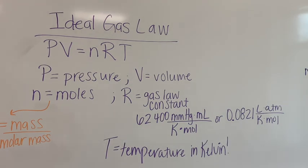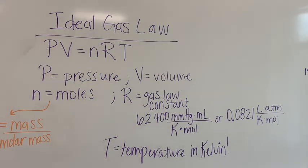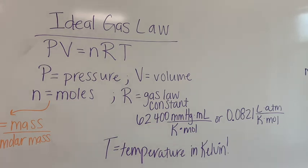It could either be 62,400 — that has units of millimeters of mercury times milliliters divided by Kelvin mole — or you could use 0.0821, which has units of liter atmospheres per Kelvin mole. Our pressure today is in millimeters of mercury and our volume will be in milliliters, so we're going to use 62,400 mmHg·mL divided by Kelvin·mole for your R value.